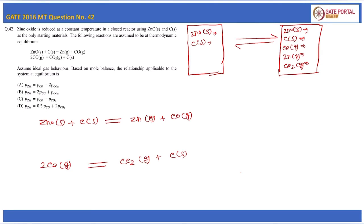Let's assume initially there were 2a moles of ZnO and 2a moles of carbon, with no other materials present. If 2x moles of ZnO react, they will consume 2x moles of carbon and produce 2x moles of Zn(g) and 2x moles of CO(g) at equilibrium.